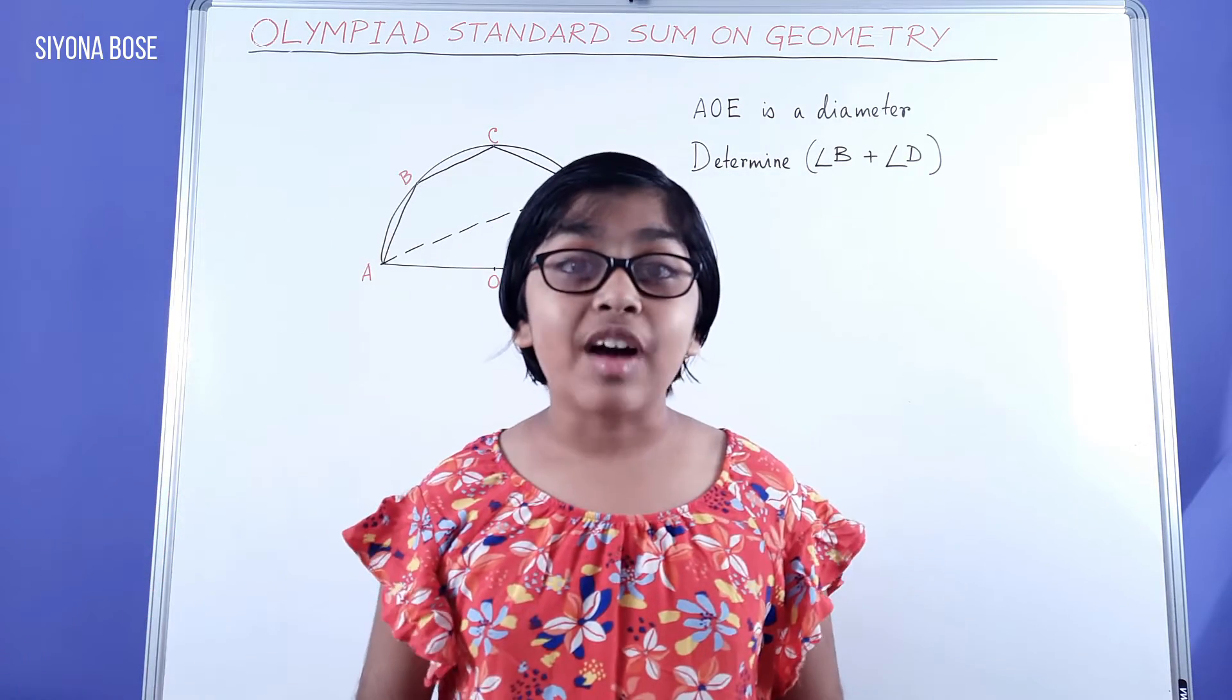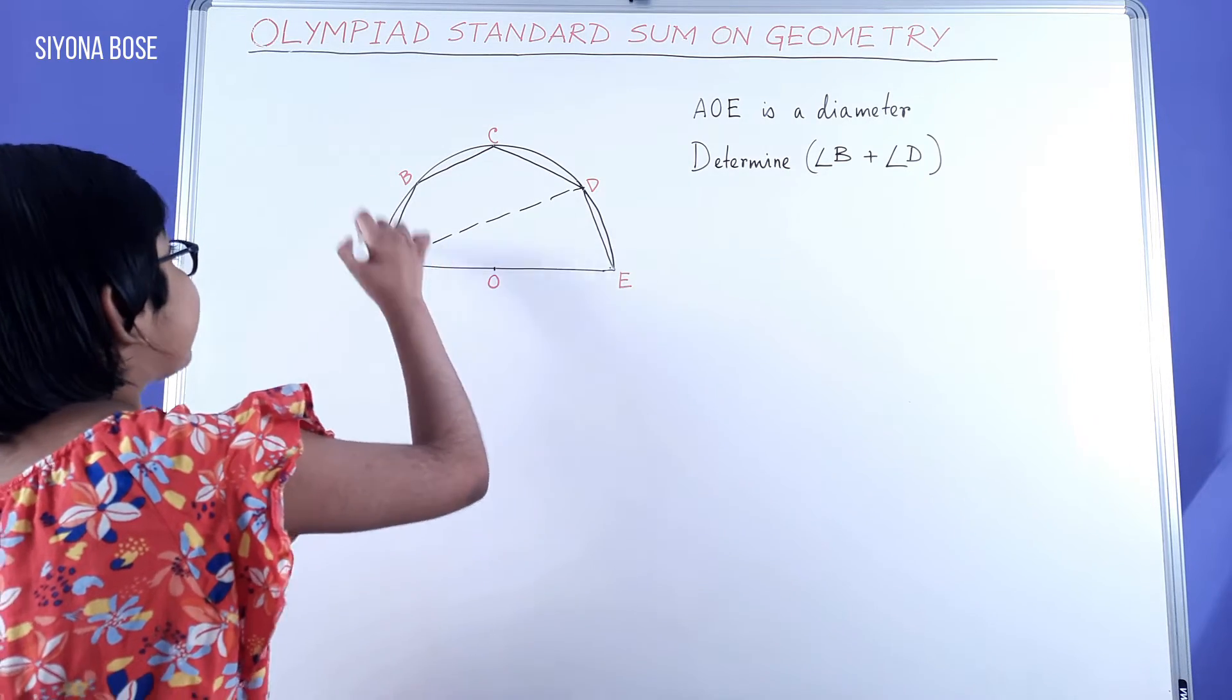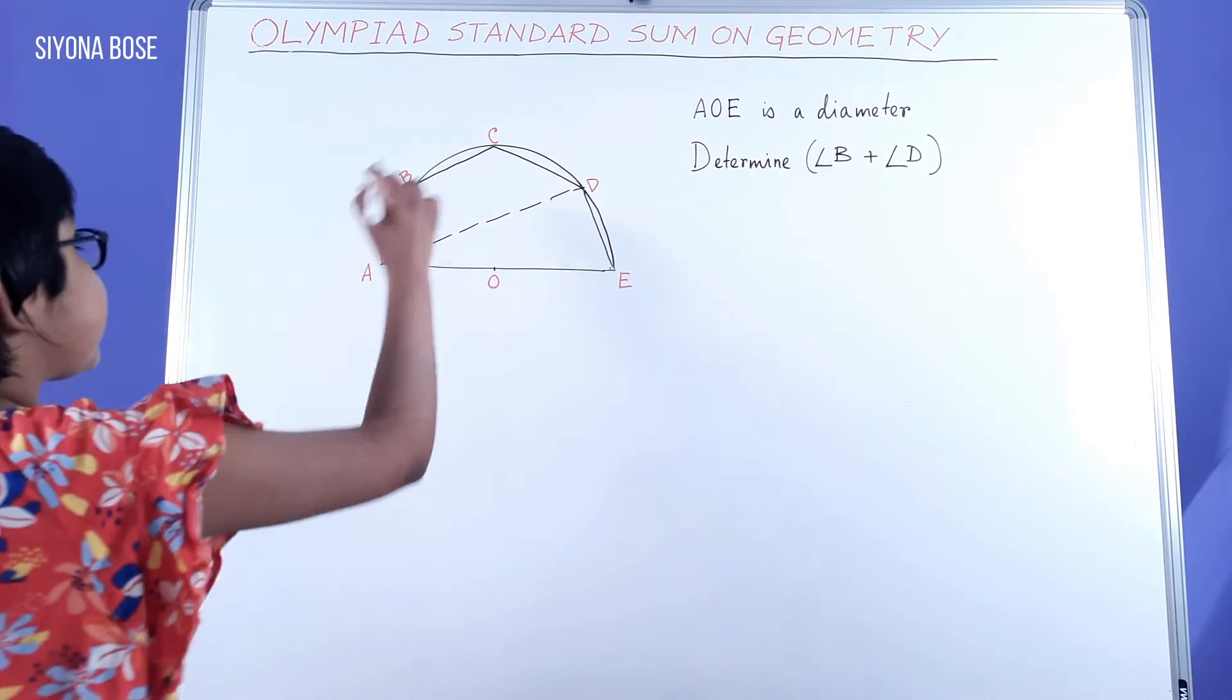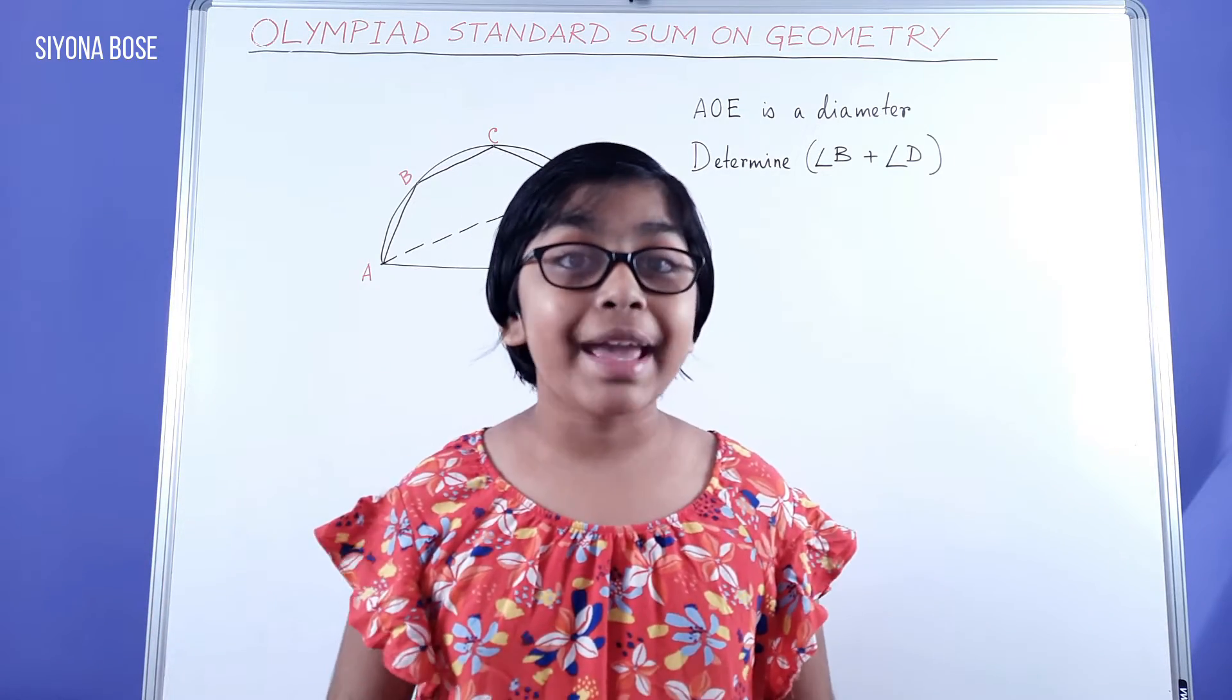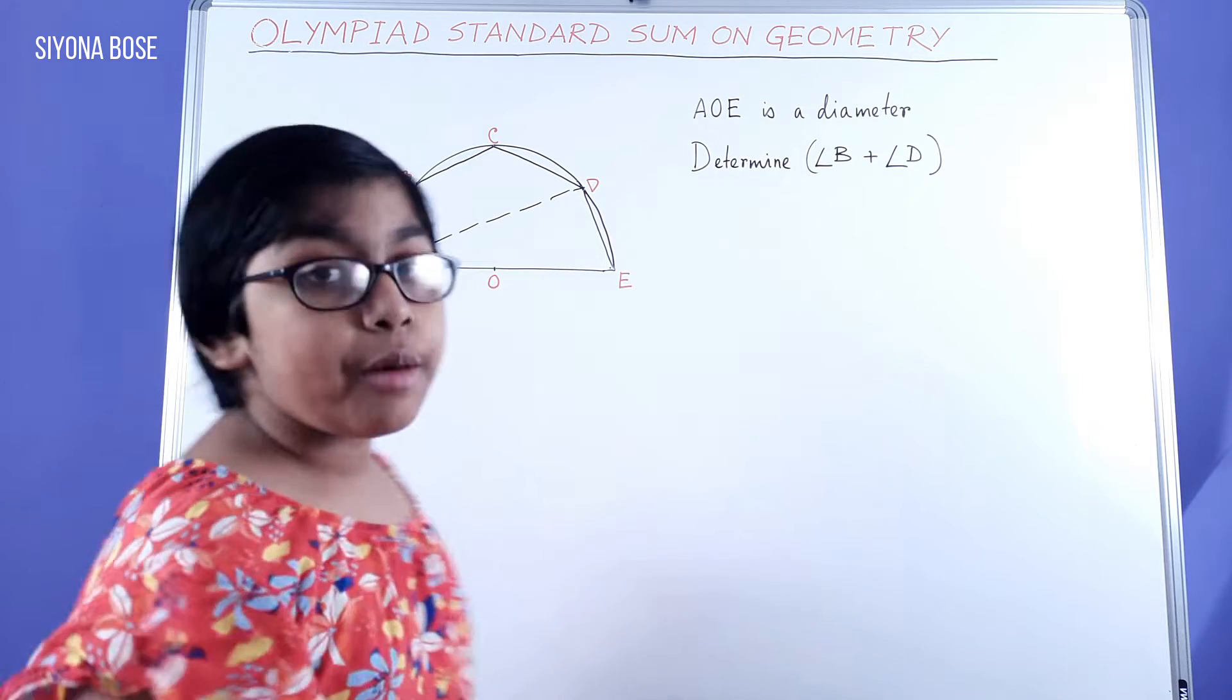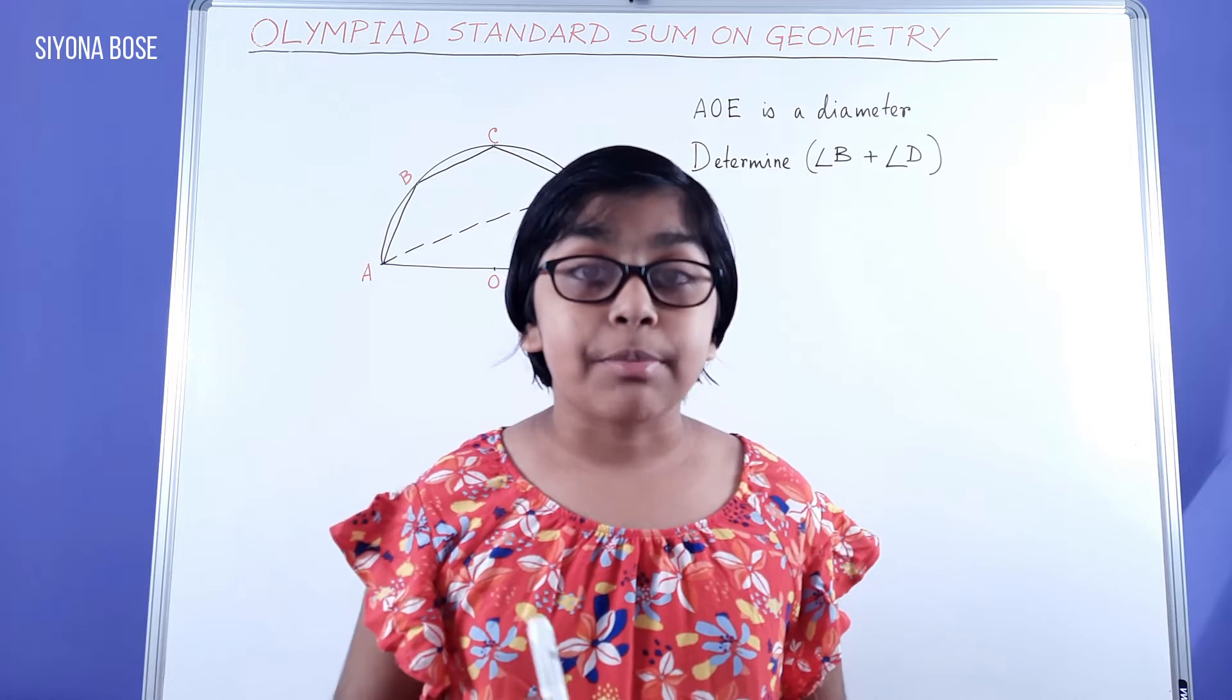Now let's move on to solving this sum. First of all, quadrilateral ABCD is a cyclic quadrilateral. The reason is the points A, B, C, and D are on the same circumference, which makes it a cyclic quadrilateral. And the sum of opposite angles of a cyclic quadrilateral is 180 degrees, or they are supplementary.